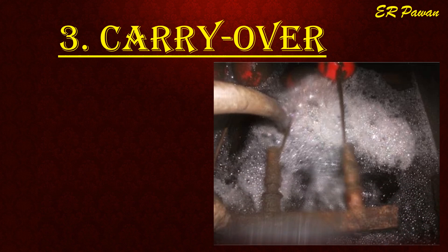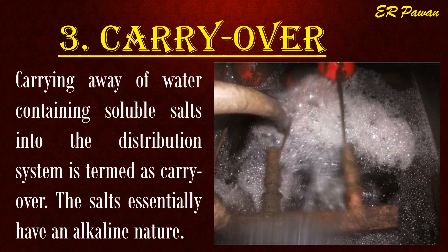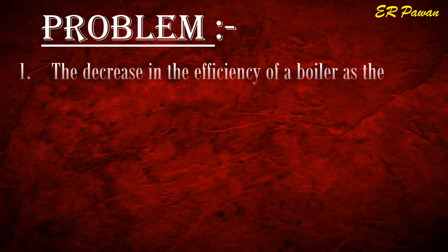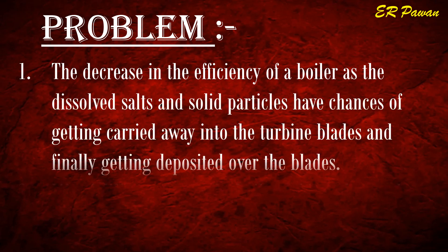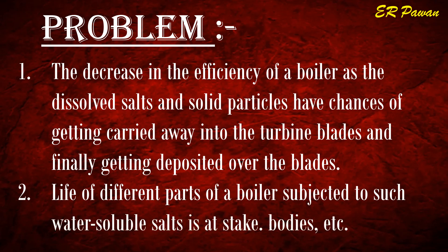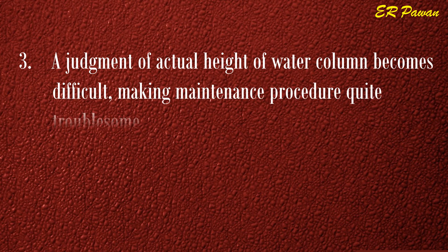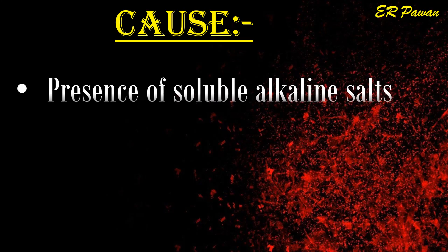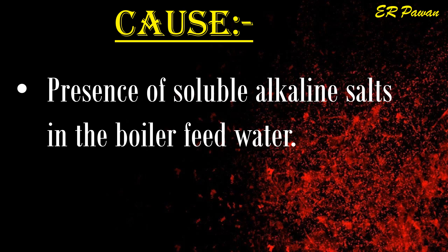Problem three: carryover. Carrying away of water containing soluble salts into the distribution system is termed as carryover; the salts essentially have an alkaline nature. Problems: one, decrease in boiler efficiency as dissolved salts and solid particles may get carried into turbine blades and deposited; two, life of different parts subjected to water-soluble salts is at stake; three, judging the actual height of the water column becomes difficult; four, carryover poses serious problems to parts such as turbine blades, steam traps, and valve bodies. Cause: presence of soluble alkaline salts in the boiler feed water.